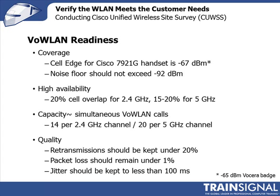When you do a measurement assessment of voice call quality, Cisco is typically looking for a retransmission rate of less than 20%, packet loss of less than 1%, and jitter of less than 100 milliseconds. Because the RF environment is constantly changing, when surveying for voice calls, you want signal strength and signal-to-noise ratio to be higher than what you actually need, so that fluctuations during the day don't affect voice call quality.